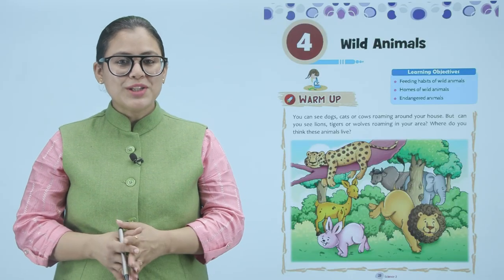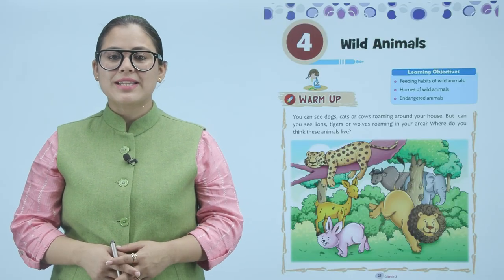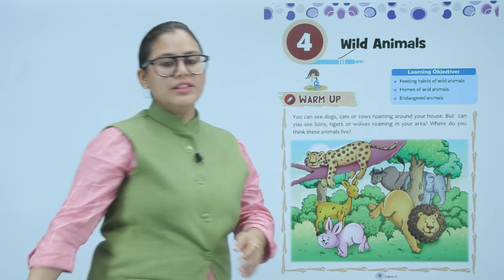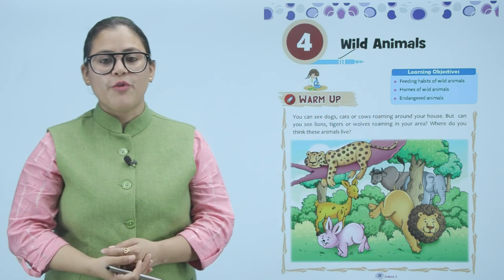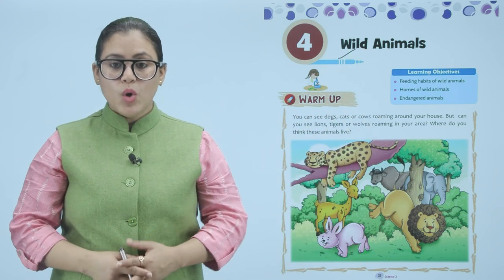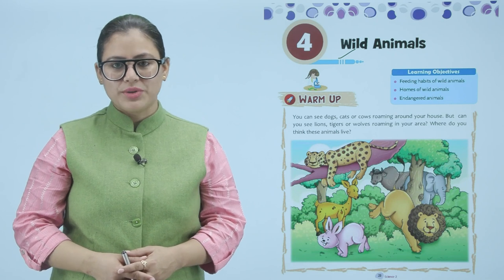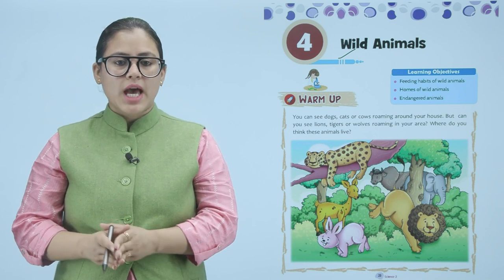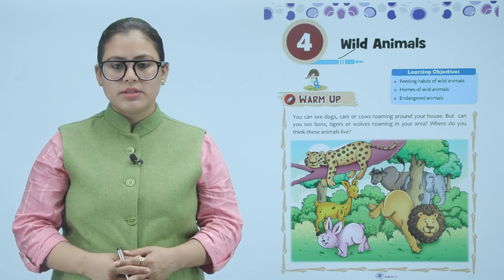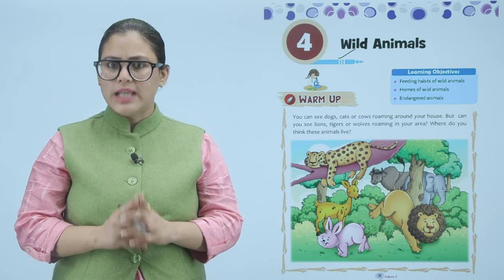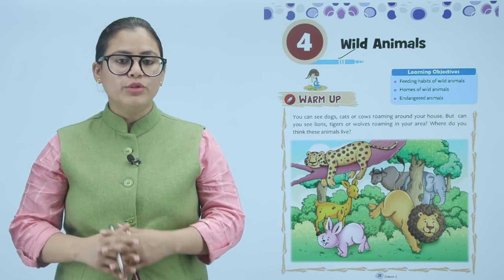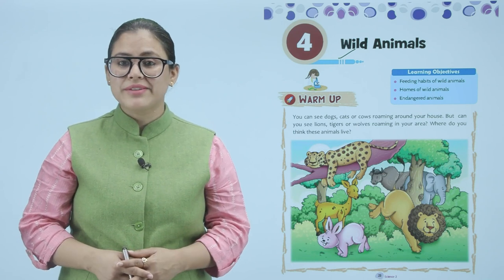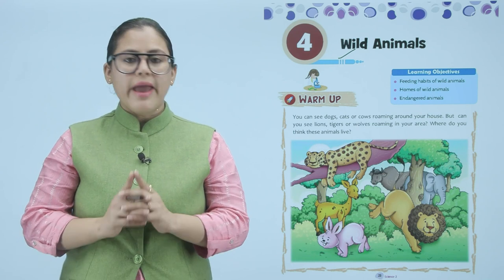Hello children, hope you're all doing good. Let's start today's chapter: Wild Animals. Learning objectives: feeding habits of wild animals, homes of wild animals, and endangered animals. You can see dogs, cats, or cows roaming around your house, but can you see lions, tigers, or wolves roaming in your area? Where do you think these animals live? Think and answer.